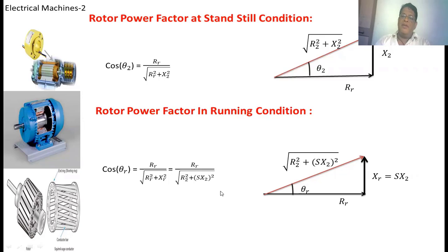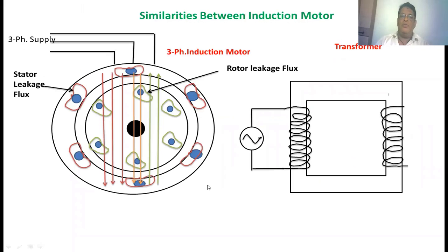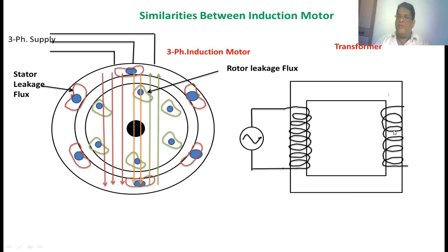In this manner we can calculate the rotor power factor at standstill condition as well as the running condition. Now we are going to see the similarities between the induction motor and the transformer. Let me start with the transformer. This is the core, this is the primary winding where we apply the voltage, and this is the secondary winding where we connect the load.